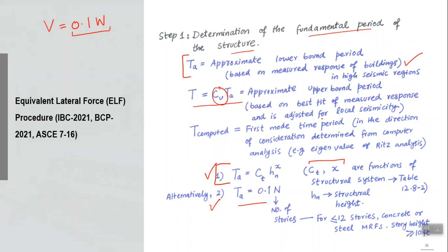The Cu factor is proposed in building code which is based on the best fit of measured response and is adjusted for the local seismicity also. The use of this upper limit will be there if you want to use the actual time period which is coming from the modal analysis.